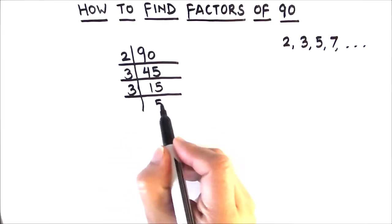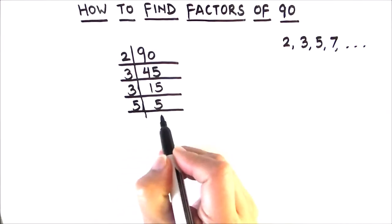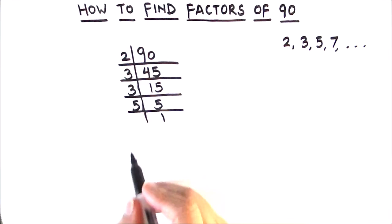3 times 5 is 15. And 5 is a prime number which is only divisible by 5. So 5 times 1 is 5. So the factors of 90 will be